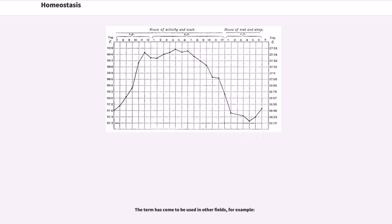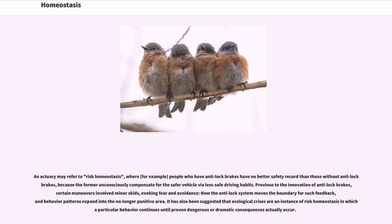The term homeostasis has come to be used in other fields. For example, an actuary may refer to risk homeostasis, where people who have anti-lock brakes have no better safety record than those without anti-lock brakes, because the former unconsciously compensate for the safer vehicle via less safe driving habits. Previously, certain maneuvers involved minor skids evoking fear and avoidance; now the anti-lock system moves the boundary for such feedback, and behavior patterns expand into the no longer punitive area. It has also been suggested that ecological crises are an instance of risk homeostasis, in which a particular behavior continues until proven dangerous or dramatic consequences actually occur.